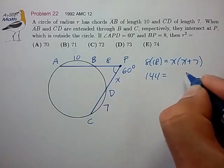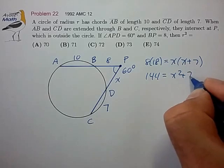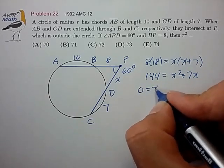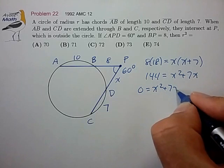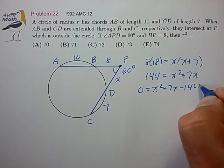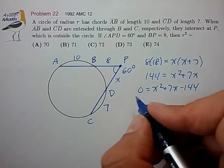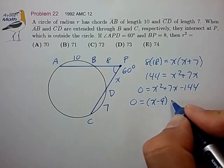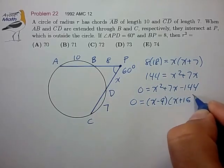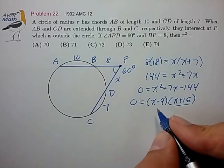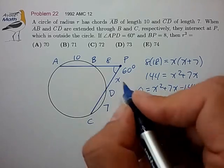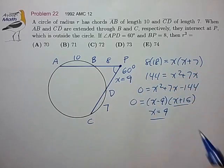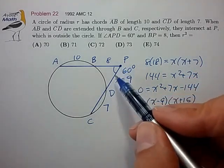Multiply that out. Move it to one side. And it looks like we can factor this as we can in most AMC problems. This is not a sensible root, but this is. So x equal 9 looks like that's the value of this line length.